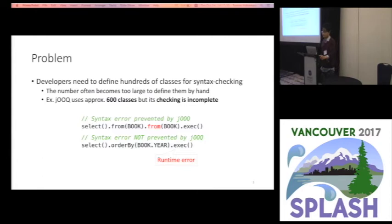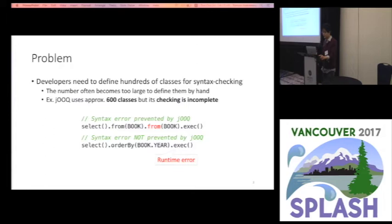For example, jOOQ, which is a fluent API for SQL, uses approximately 600 classes, but its checking is still incomplete — which means developers need to define more than 600 classes to check all the rules of SQL.